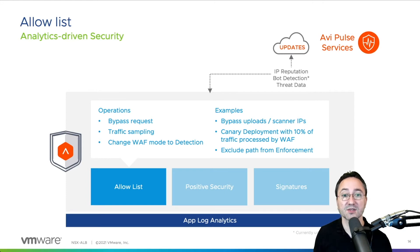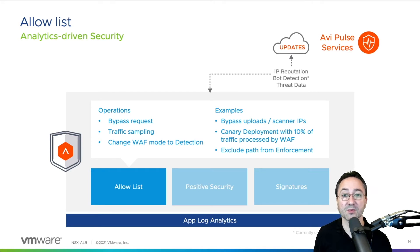The second use case for the allow list is traffic sampling. This enables the application firewall only on a subset of requests when a canary deployment style for a new RAV policy is required.